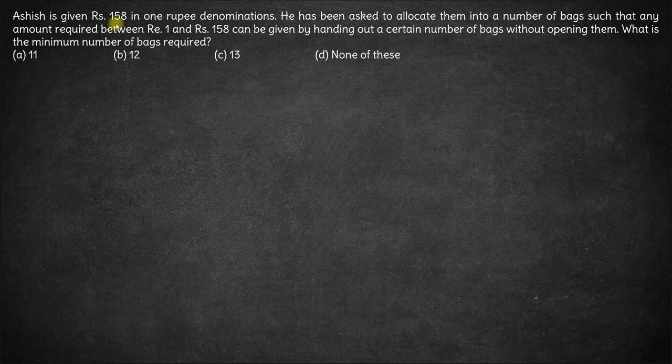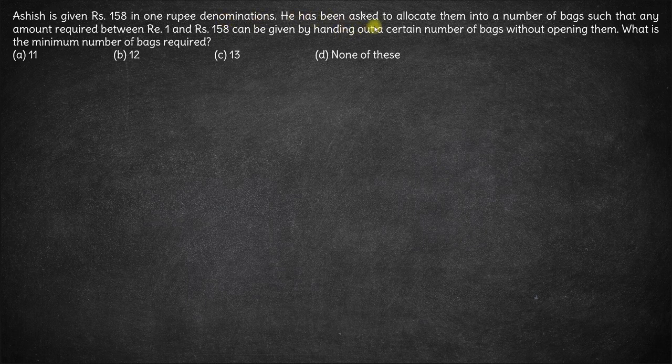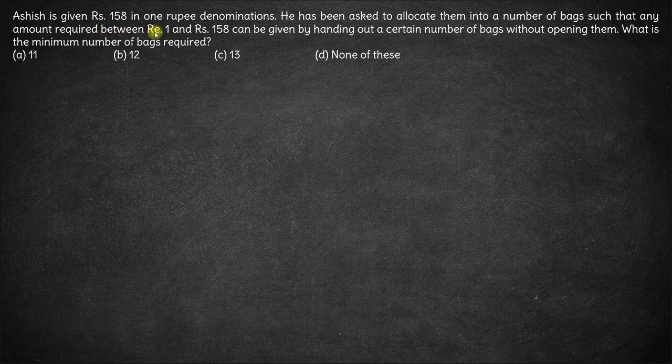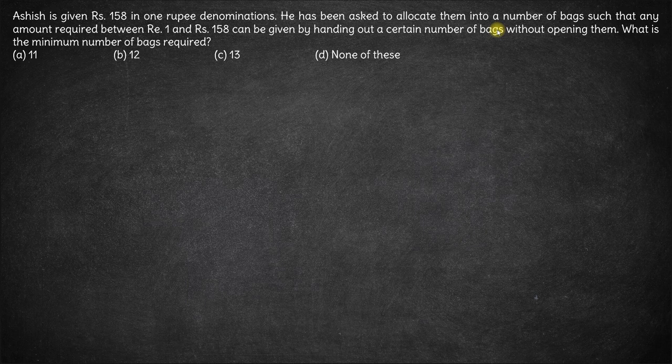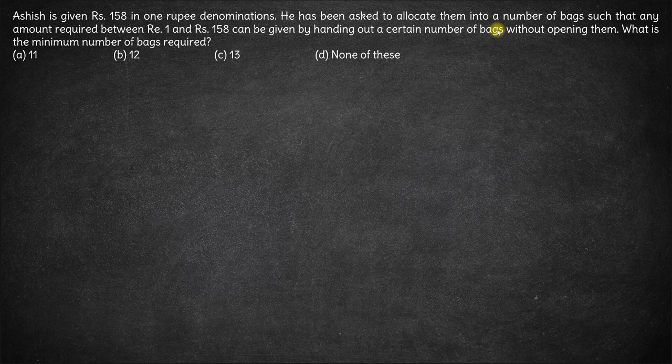Ashish is given rupees 158 in 1 rupee denominations. He has been asked to allocate them into a number of bags such that any amount required between 1 and 158 can be given by handing out a certain number of bags without opening them. What is the minimum number of bags? Without opening them means the whole bag has to be given. If there are 10 coins in a bag, all 10 coins will be given. It is not possible to open the bag and take out two coins.